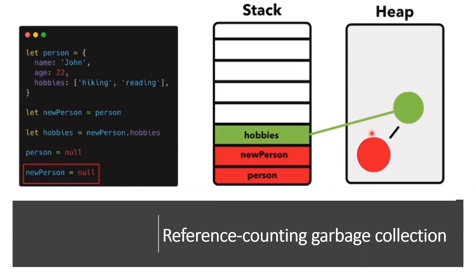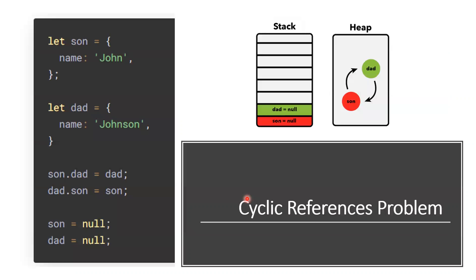This is how the reference counting algorithm works. However, the hobbies array is not deleted because the hobbies reference is still pointing to it. So only the person object is deleted; hobbies remains in the heap. This is how the reference counting algorithm works, but there is a problem — the circular reference problem.